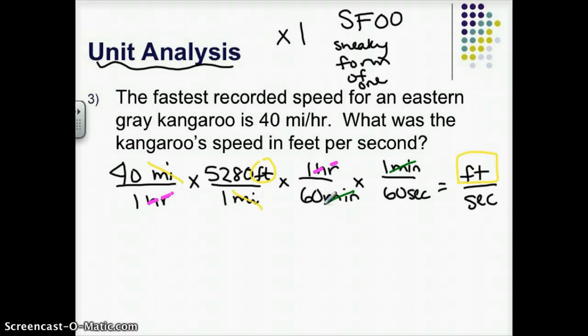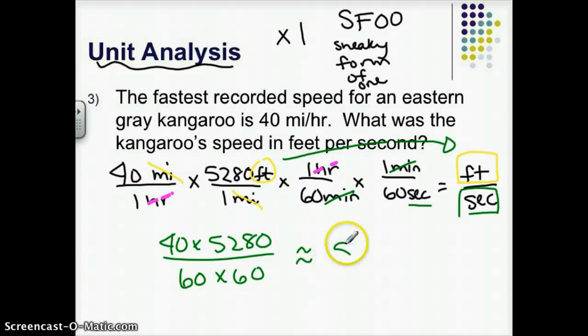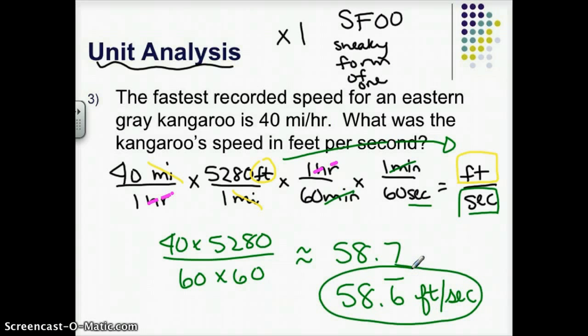Now if you look across at all your units on the top, everything is canceled out except for feet, which is good because I want feet as my answer. If you look on the bottom, everything is canceled out except for seconds, which is good because I want seconds as my answer. So now I have kind of a simple fraction problem where on the top I'm doing 40 times 5,280, and on the bottom I'm doing 60 times 60. So I can do 40 times 5,280 divided by 60 times 60, and I'm going to get an answer of about 58.7, or if you want to be precise, it's 58.6 repeating. And this is my answer in feet per second. This is usually a pretty tough topic at first, so we'll see if I have time to come back to it or if we'll have to just do some of it in class.